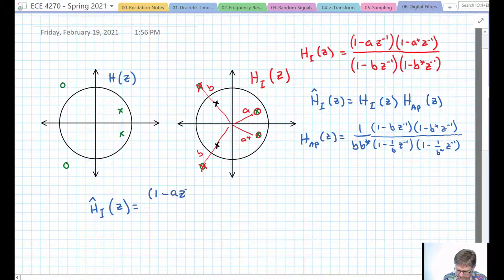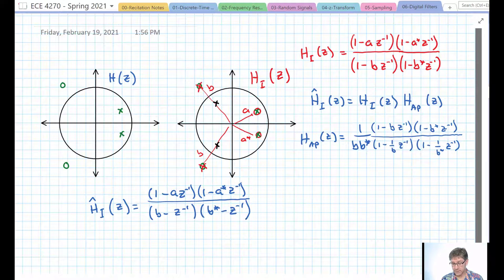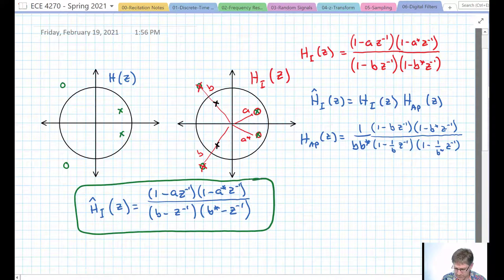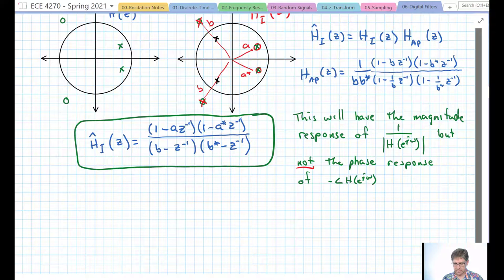It's equal to (1 - a*z^(-1))(1 - a**z^(-1)) on the top, and on the bottom, instead of having (1 - b), we're going to have (b - z^(-1)) and (b* - z^(-1)). So the product of H all-pass and our ideal but unimplementable inverse filter gives us this. So now we have a filter that will invert the magnitude response. Unfortunately, it can't do anything for the phase response, or it'll do something, but the phase response won't be quite right. So there we are with our using an all-pass filter to get an approximate inverse where in other situations we actually wouldn't be able to have an inverse.